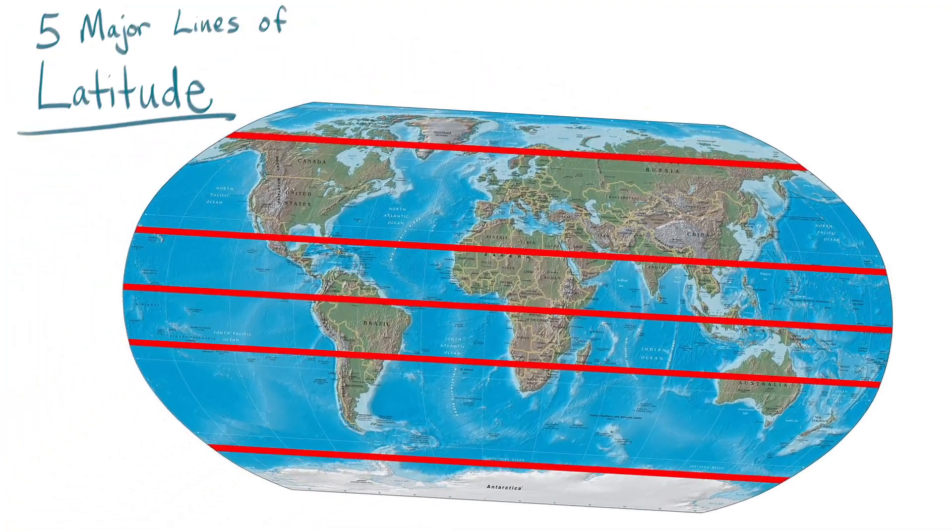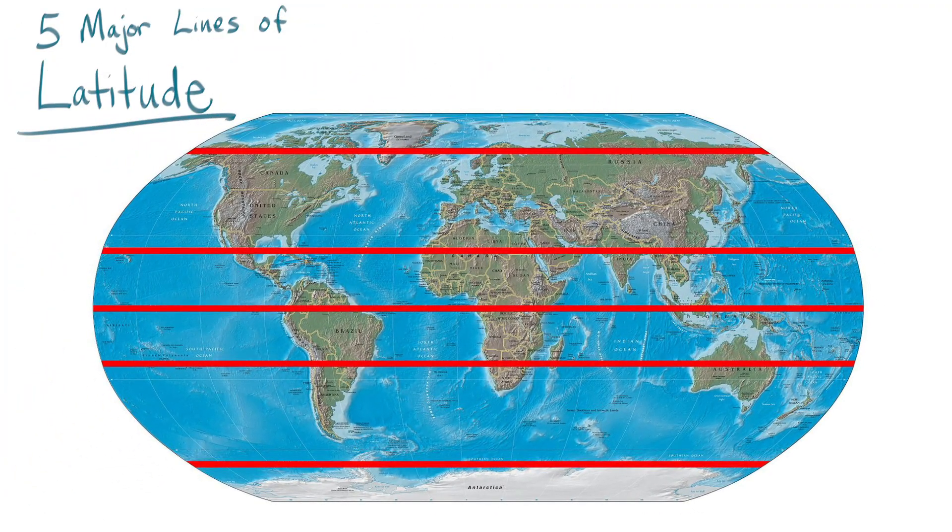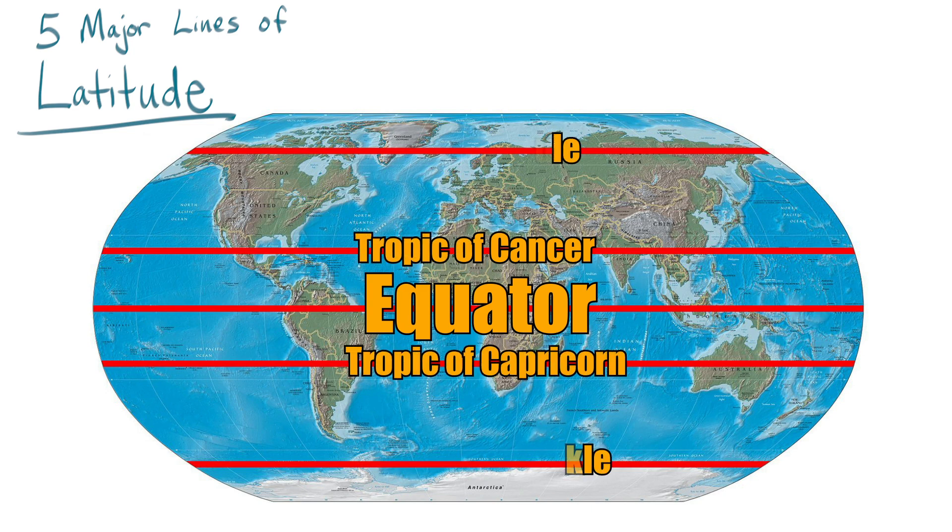So in conclusion, you have five major lines of latitude. Those are the equator in the very middle of the Earth. The tropics, both north and south: the Tropic of Cancer in the north and the Tropic of Capricorn in the south. And on the top and bottom of the world, we have the Arctic and the Antarctic circles.